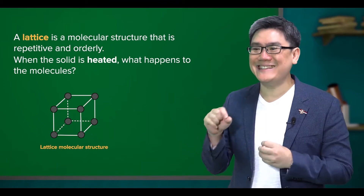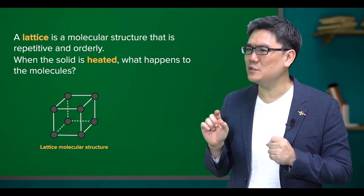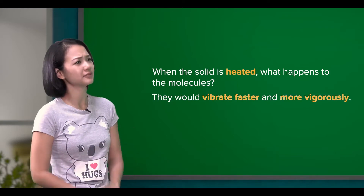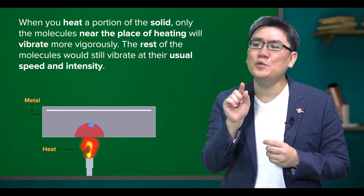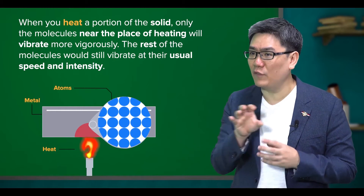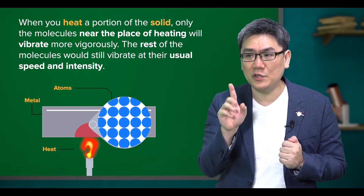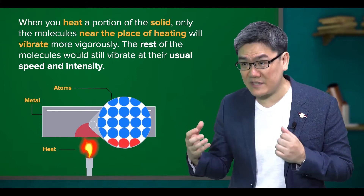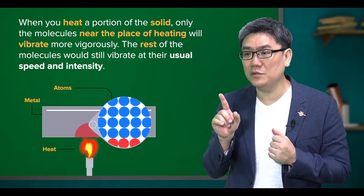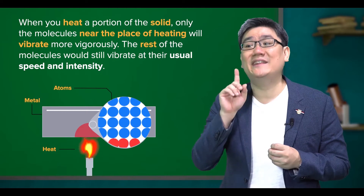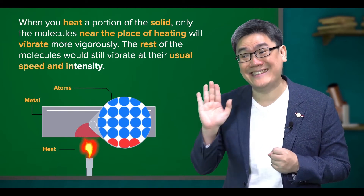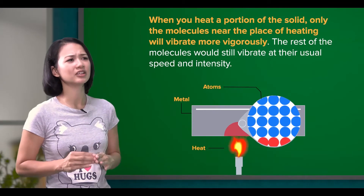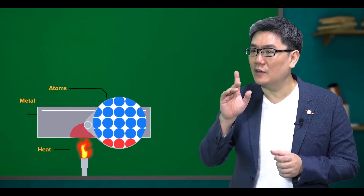So when the solid is heated, what happens to the molecules? They would vibrate faster and more vigorously. So when you heat a portion of the solid, only the molecules near the place of heating will vibrate more vigorously. The rest of the molecules would still vibrate at their usual speed and intensity. That means only that particular region in the solid is hot? Correct.